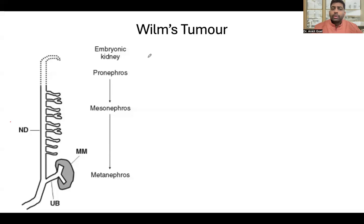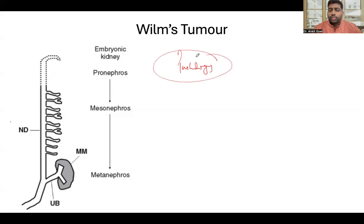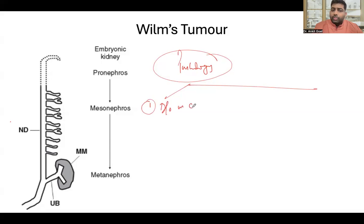Wilms tumor is the most common malignant renal tumor of childhood. To understand the pathology, you need to know the two basic concepts which are responsible for the origin of the Wilms tumor. The first school of thought is that disorders in nephrogenesis are mainly responsible for Wilms tumor development.